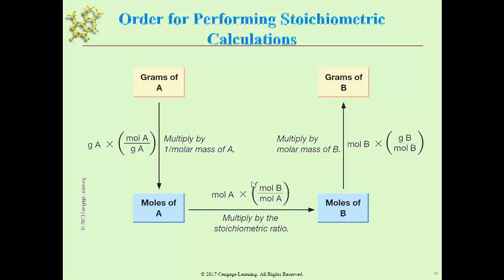This is just a generic expression — what you'll be using comes from the balanced equation. The mole of A is the amount that you are either given in the problem or that you find in the first step. That mole you're given is not plugged into this ratio. This ratio is the stoichiometric conversion factor that you're using from the balanced equation, and we've done that already.